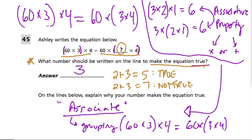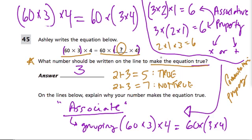Another alternative might be the commutative property. If they ask you about a question where the order is changed around — so instead of 3 times 2 times 1, they put 2 times 1 times 3, or some other order — the answer will still be the same; you'll always get 6. When you change the order of the numbers like this, as long as you're just doing multiplication or addition, that's the commutative property. That won't change the answer as well. Look out for that one too. Thanks.